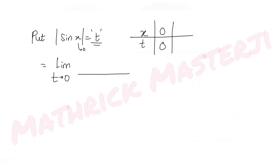So we get limit t→0 of [e^(2t) - 2t - 1] / t², multiplied by 1. Substituting t = 0: e^0 = 1, minus 0, minus 1 gives 0 in the numerator, and t² = 0 in the denominator. We still have the 0/0 form.